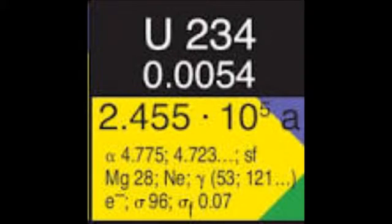Uranium-234 is a very unstable element due to the transformations that take place in which a new element is formed. Typically, in this process known as radioactive decay, particles are emitted. These particles, known as alpha and beta particles, come from the nucleus of an atom.